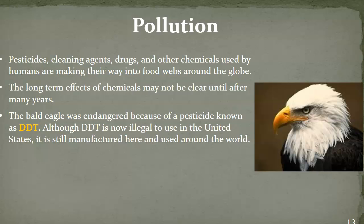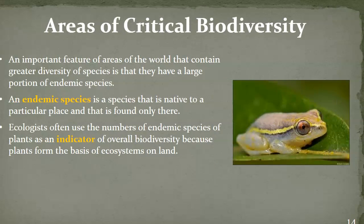Another cause would be pollution. We have pesticides, cleaning agents, and other chemicals that make their way into the food web — they leach into the soil and run off into the water. The long-term effects of chemicals don't become clear until many years later. The bald eagle, our national symbol, was endangered because of the pesticide DDT. It's illegal to use DDT, but it's still manufactured here and used around the world, and can find its way back into our soil and water.